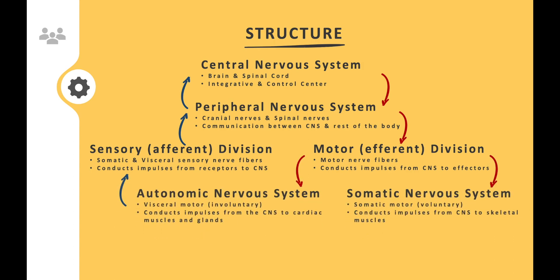The motor division is further broken down into two systems: the autonomic nervous system and the somatic nervous system. Both are part of the motor division, but the type of motor action differs. The autonomic nervous system deals with involuntary actions, whereas the somatic nervous system deals with voluntary actions. Actions that happen on their own — that you do not consciously control — are regulated through the autonomic nervous system.